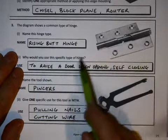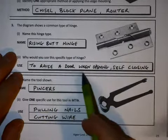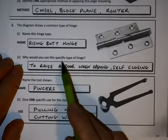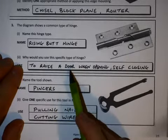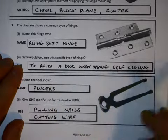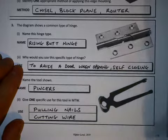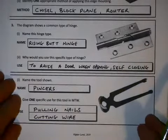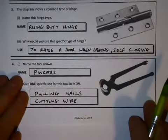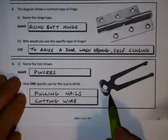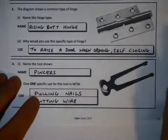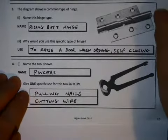The reason for using a rising butt hinge is to raise the door when it's open, or it can be self-closing, and it can also lift off. The tool shown is pincers, used for pulling nails — it could also be used for stripping wire as an answer.